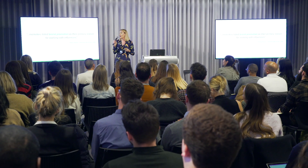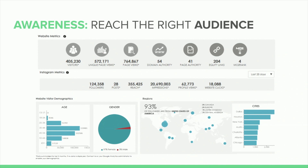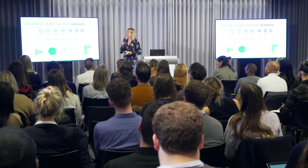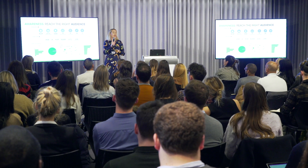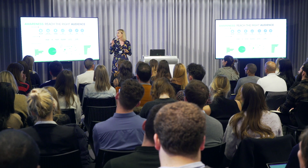So why are marketers working with influencers? Marketers list brand promotion as their primary reason for working with influencers, and we did the same at M&S International. I think what a lot of marketers fail to do is look straight at reach — how many people can we reach? But the mistake there is that they're not looking at who they're trying to reach. Ultimately, looking at the audience of that influencer is key.